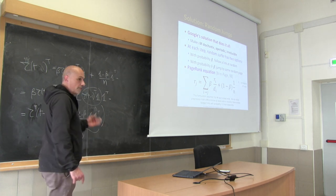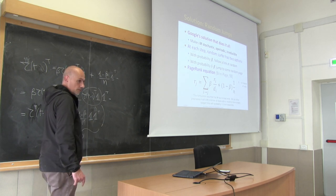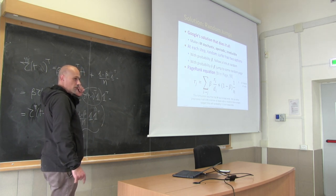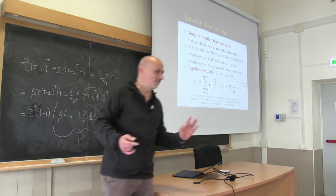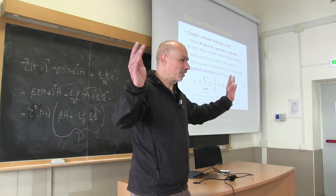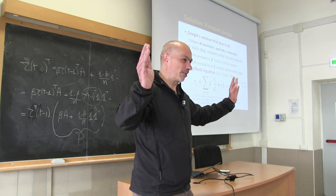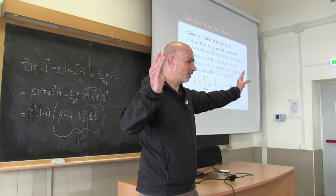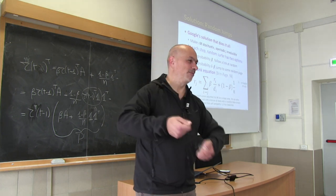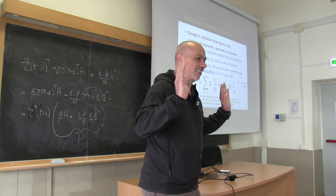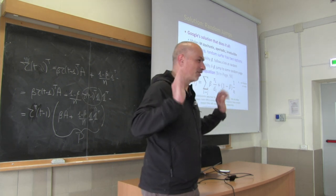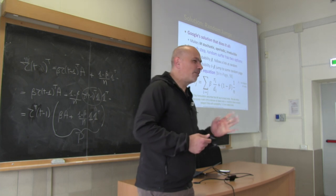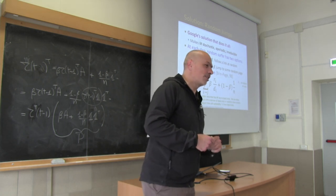The number of steps it takes depends on the second eigenvalue of P, which in turn depends on beta. The smaller beta, the smaller the second eigenvalue, and the faster the method converges. So if you want fast convergence, pick beta small — but if you pick beta small, you lose the topology of the original graph. We always have conflicting objectives; there is no free lunch.